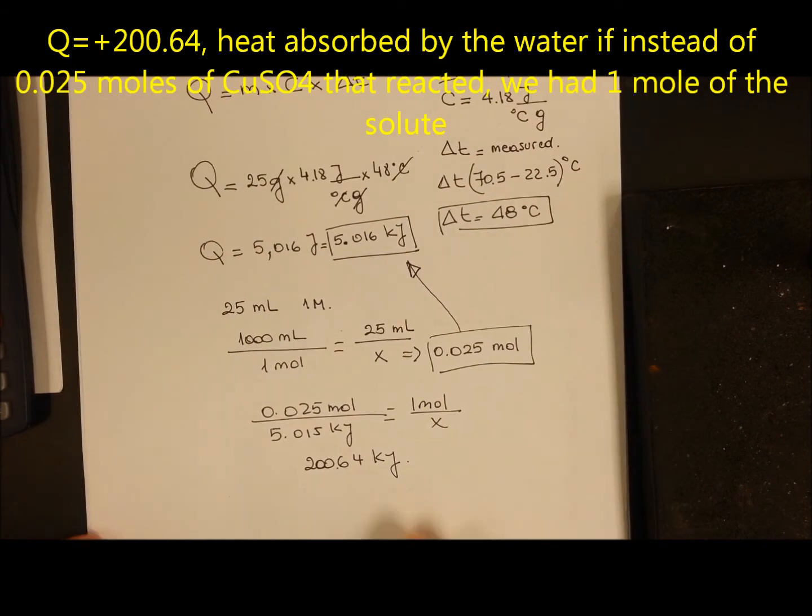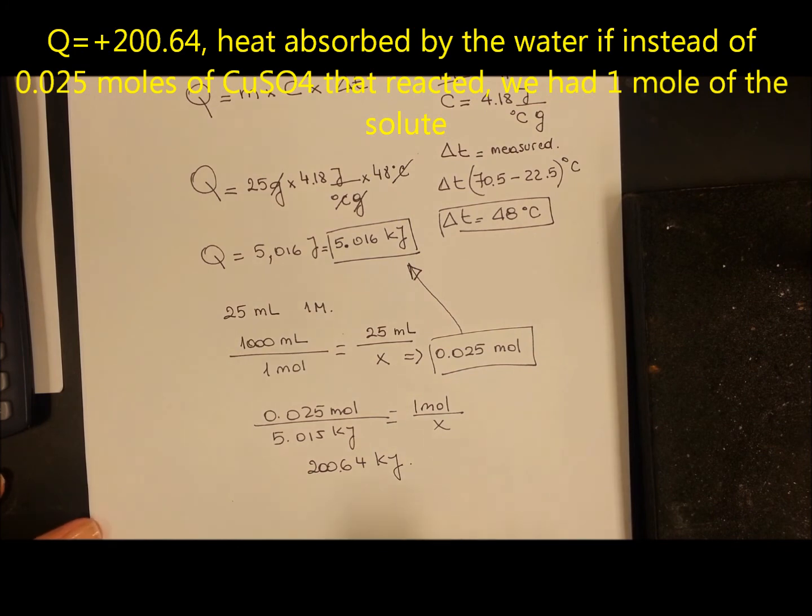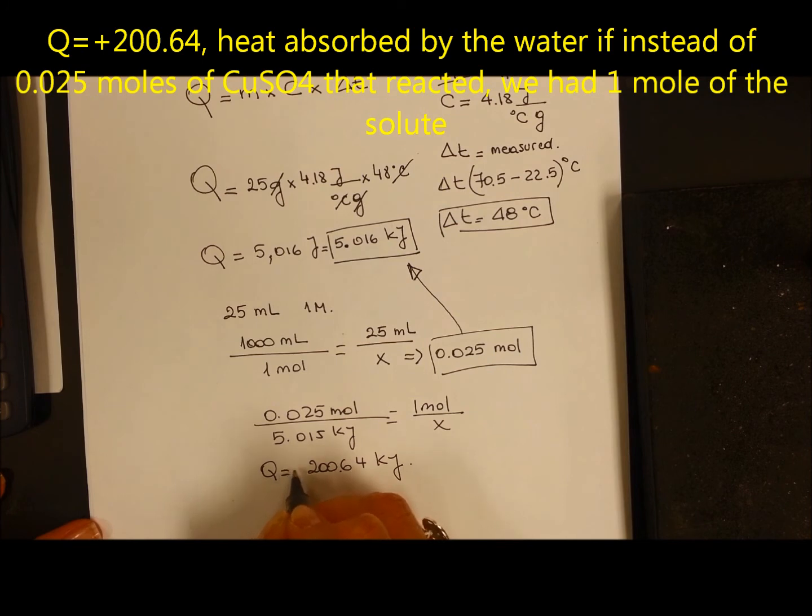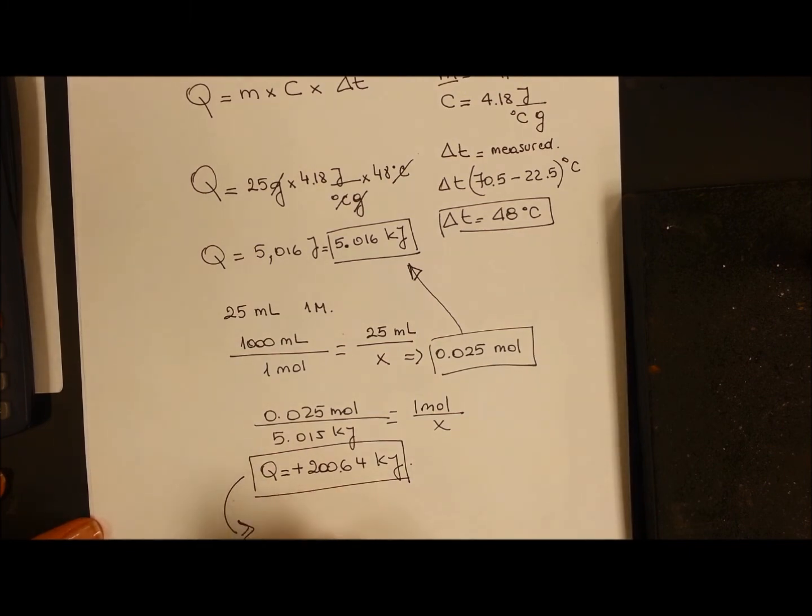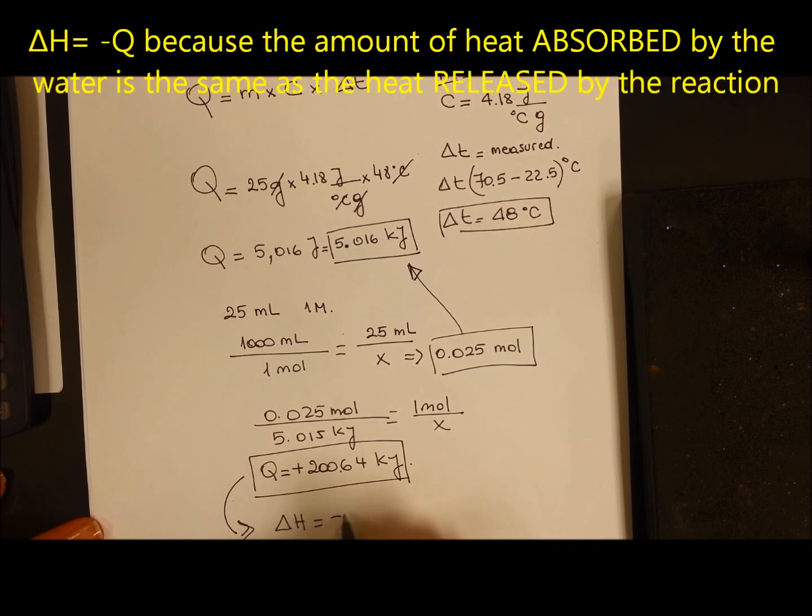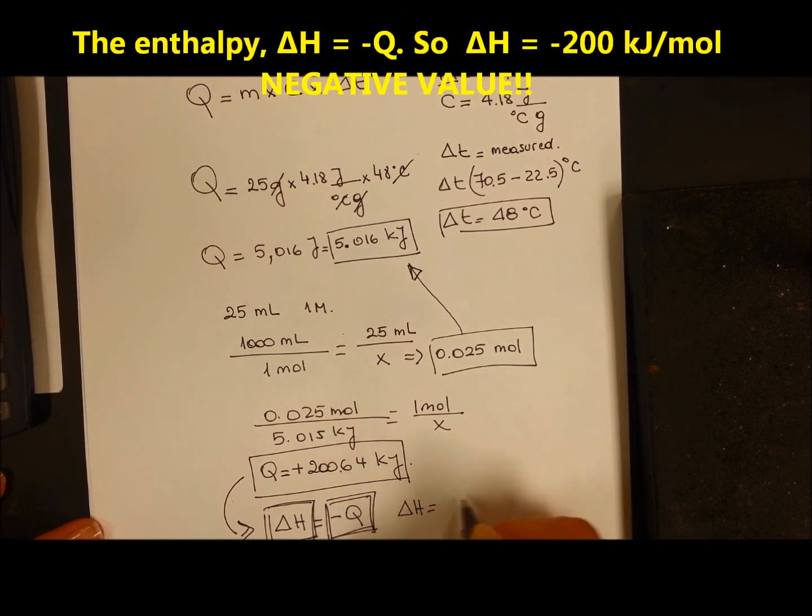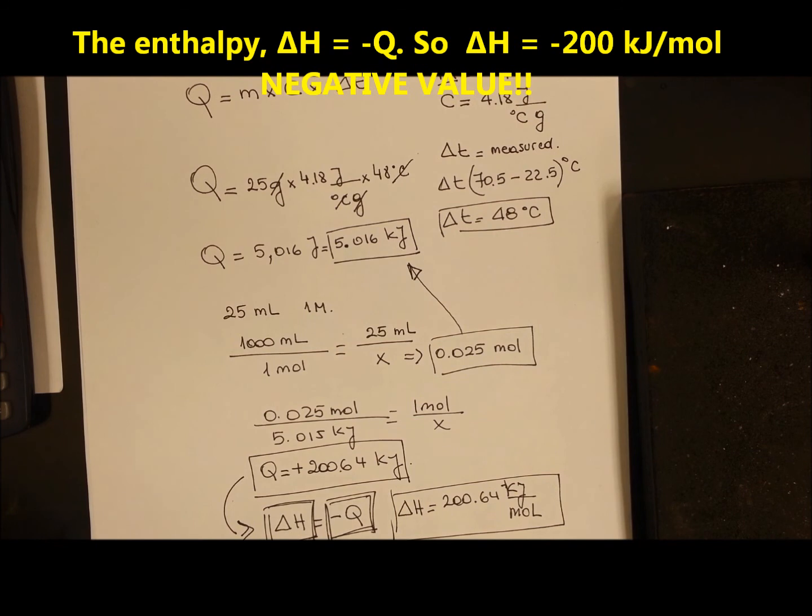What is that? Well, that is the amount of heat absorbed by the water if we had a mole of copper sulfate reacting. In this case, the Q is positive because it's the amount of heat that was absorbed by the water. But the delta H is going to be minus Q. In other words, the enthalpy change of the reaction is going to be negative the amount of energy that was absorbed by the water. So in this case, delta H is going to be -200.64 kilojoules per mole for the reaction of copper sulfate solution, one molar with zinc.